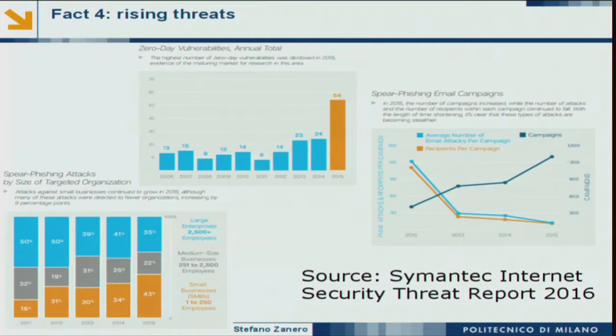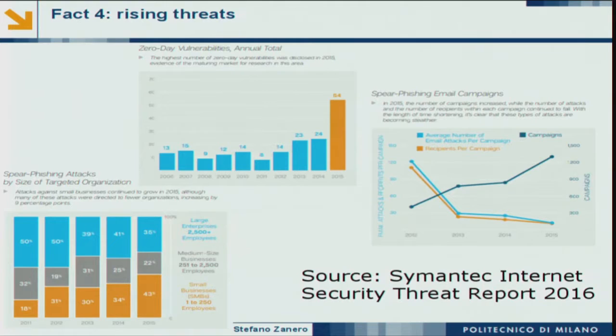If there is a vulnerability but nobody is going to exploit it, it doesn't really create a risk. Risk rises when there is value to protect and someone who wants to endanger it. Take the Miller and Valasek act of taking over a Jeep remotely — a scary and nicely done hack. But if you want to kill someone driving a vehicle, there are a gazillion easier ways. How impactful is that for that specific scenario? Maybe not very.